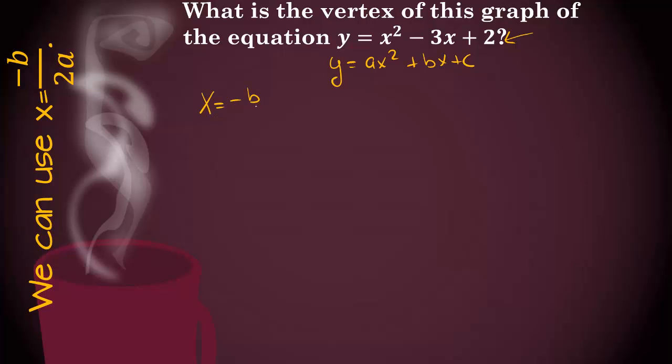So x equals negative b over 2a. So x equals negative b. Well, it's negative 3. So we'll have negative 3 over 2 times. Of course, we have a 1 here. 2 times 1, which is 3 over 2. Well, that's great because that's what we got in the last one. So we're doing pretty good.